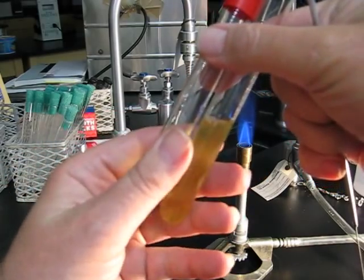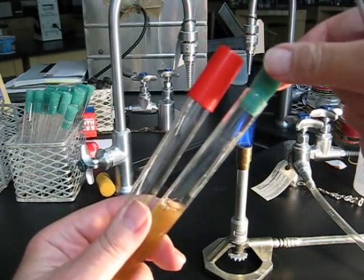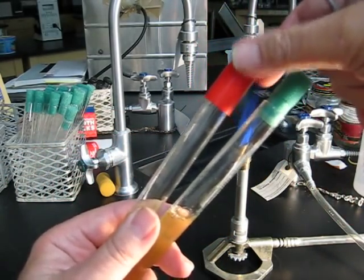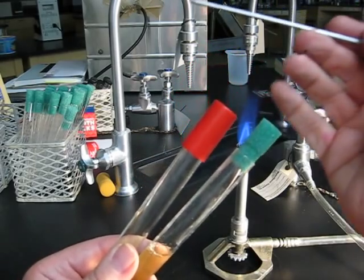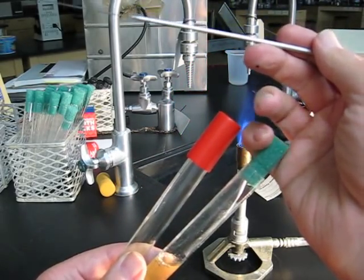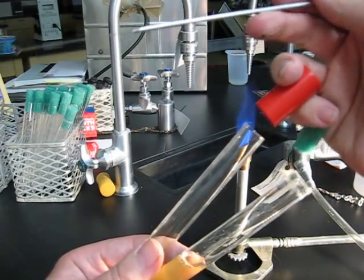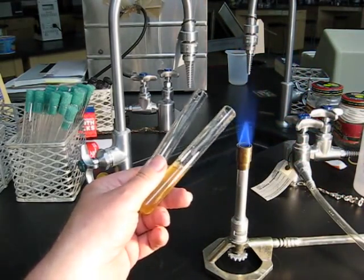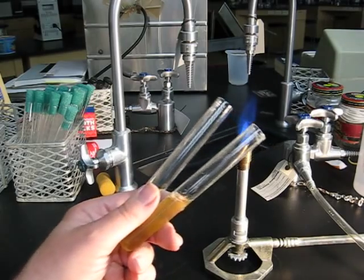It is always a good idea to loosen the caps and plugs before the transfer operation begins. The tubes are held at an angle and the caps and plugs are pulled out as shown with the hand that is holding the inoculating loop.